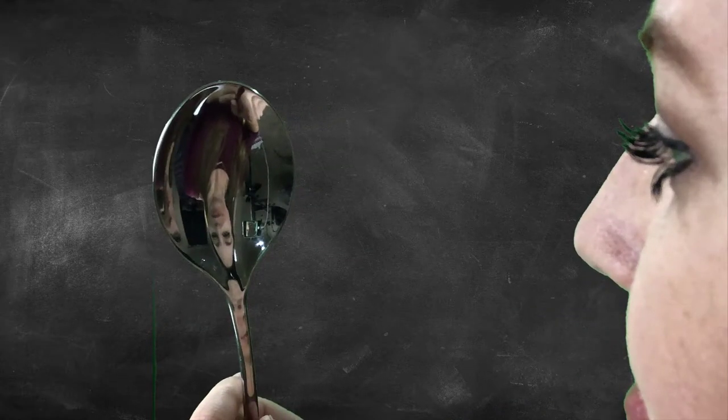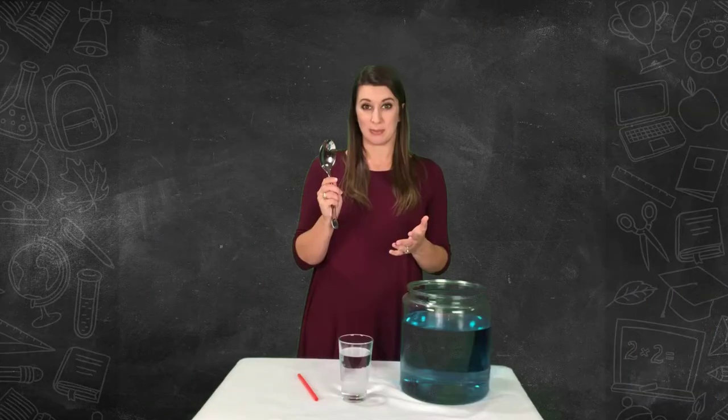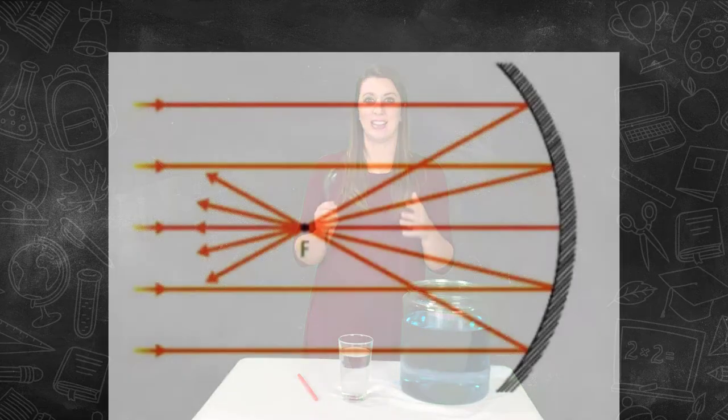Now turn the spoon around and look on the inside of the spoon. You will see your face, but it's upside down and flipped. When the light is reflecting off of the spoon this time, the direction they are reflecting is swapping to flip your image like this.